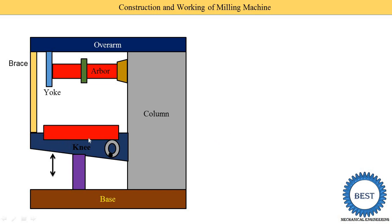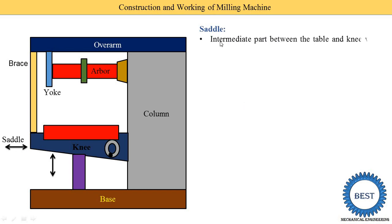On the upper part of the knee, guideways are provided for mounting the saddle. The saddle moves toward or away from the column — in the X direction. The knee moves up and down, while the saddle moves in this cross direction. The saddle is the intermediate part between the table and knee, acting as a support for the table.